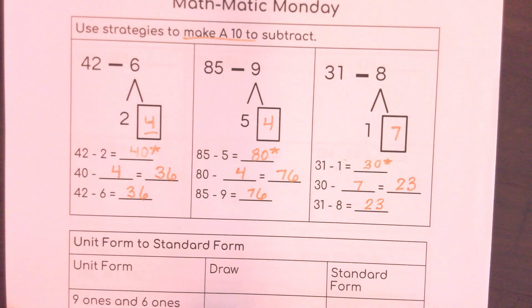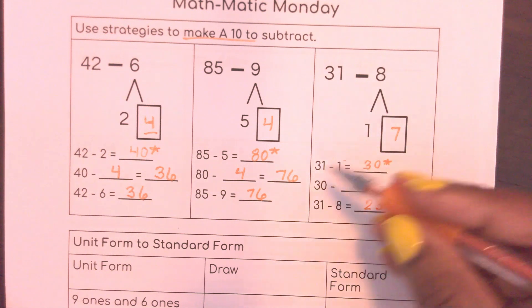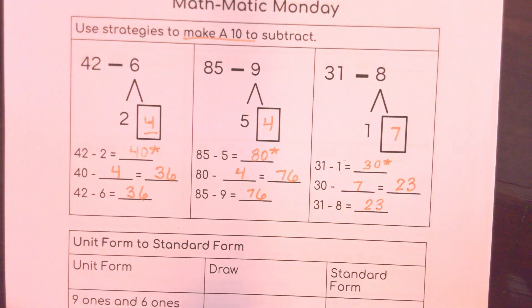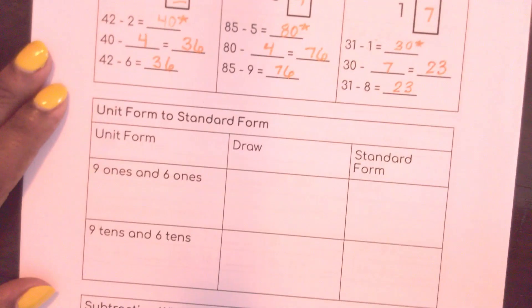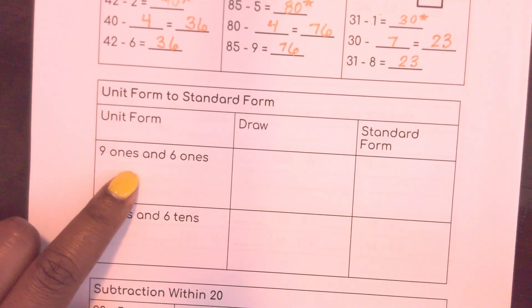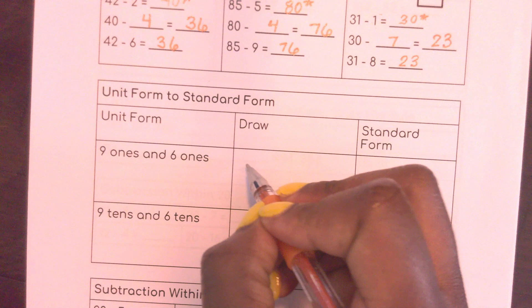So here 31 minus 8 is 23. Excellent work. All of this math that we did here could be done mentally. All you're trying to do is make a 10. Here I have some unit form. I have to draw and I'm going to change it into standard form. So these are numbers.